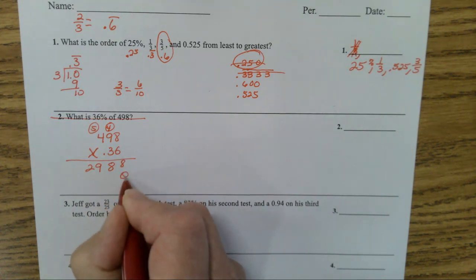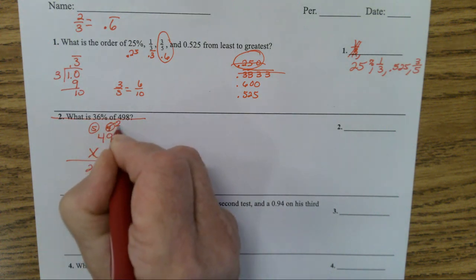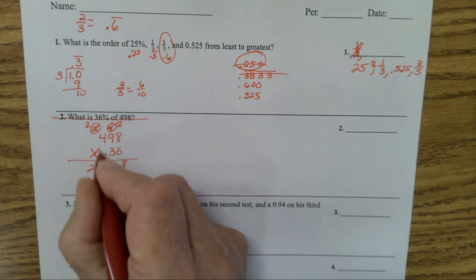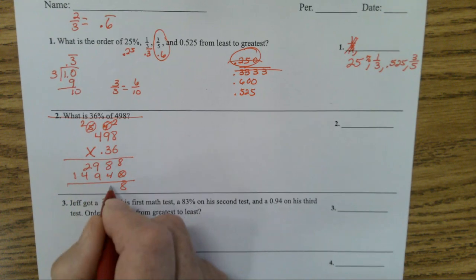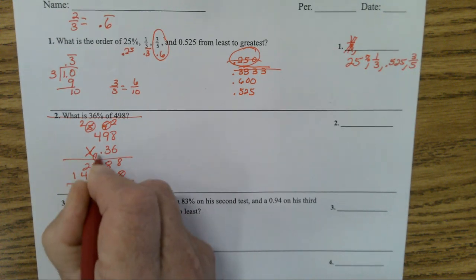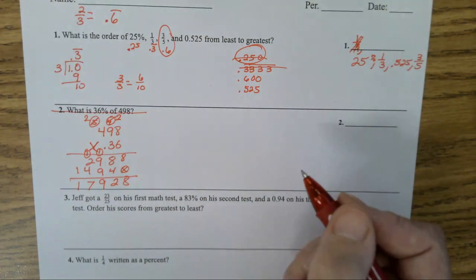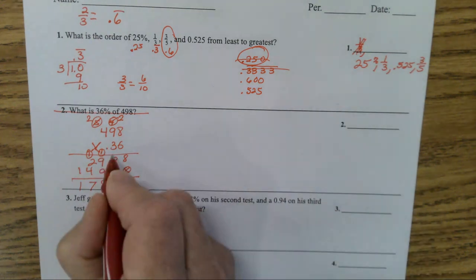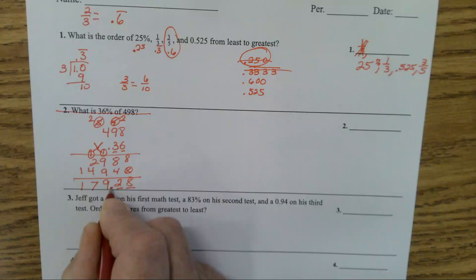Add a decimal point. 3 times 8 is 24, carry a 2. 27 plus 2 is 29, carry a 2. Now we haven't practiced multiplying with decimals, but you should have learned this last year. There are two numbers behind the decimal point, so you have to have two numbers behind the decimal point in the product. The answer would be 179.28.